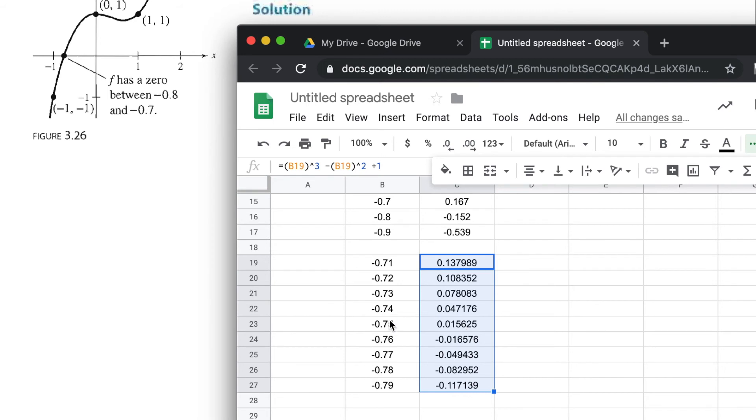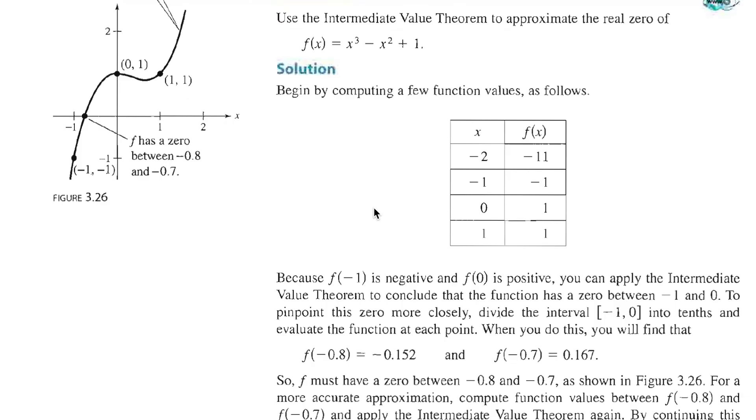There we have it! Look at that—right between -0.75 and -0.76, I went from positive to negative, so my zero is in there. We could just keep on going for as long as we want.